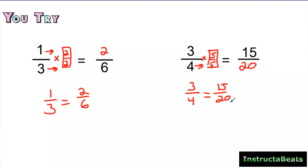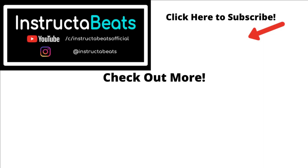Hopefully this was helpful to you. You have a new skill: you know how to find equivalent fractions using multiplication. Remember, it's all because we're multiplying by 1 — our identity property of multiplication tells us that's going to give us an equivalent fraction. Thank you so much for checking us out today. Please check out all our fraction songs and other fraction lessons. Like, subscribe, join our Instructor Beats family, leave a comment, and let us know where you're watching from. We always respond. Thank you so much — Instructor Beats out, see you in the next one!